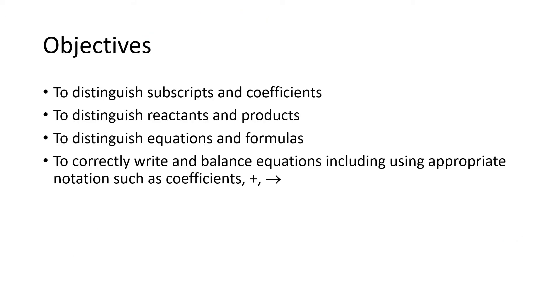Our objectives include distinguishing subscripts and coefficients, reactants and products, equations and formulas, and also to correctly use the notation that goes with balancing equations, such as writing in coefficients and the plus sign to separate reactants from other reactants and products from other products, and the arrow, which we'll call the yield sign.